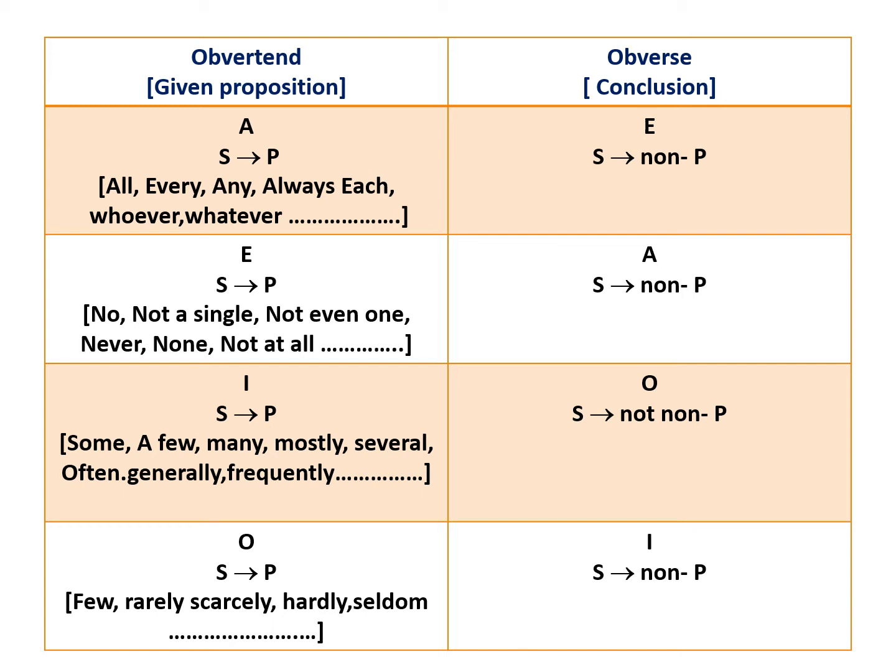Now we learn the table of obversion. The obvertend is the given proposition and the obverse is the conclusion. If the words used in the proposition are all, every, any, always, each, whoever, whatever, etc., then it is an A-proposition. Suppose the basic form of an A-proposition is given as 'all S is P', then its obverse will be E, that is the basic form will be 'no S is non-P'.